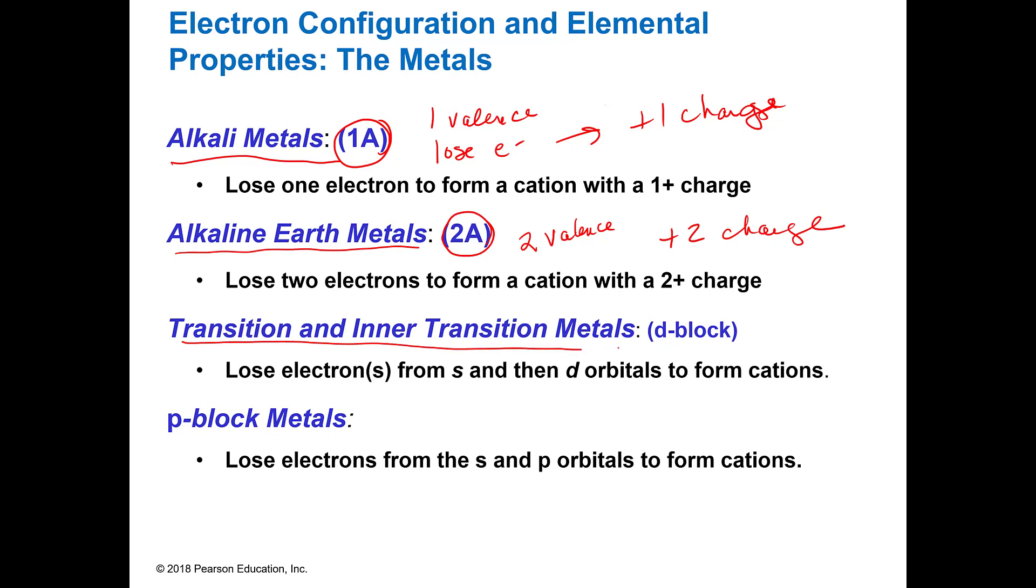The transition and inner transition metals, the d-block and the f-block, are going to also form positively charged ions. But they are variable, we don't know they could lose one, they could lose two, because they don't follow all of our nice rules. And then the p-block which is on your far right is going to have several groups and we're going to talk specifically about those.